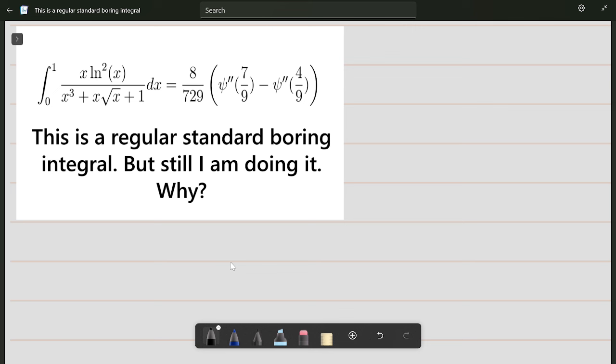This is a regular standard boring integral, but I'm still doing it just so that you would know how we solve these problems. Let's start. We basically have the integral from 0 to 1 of x ln²x divided by the given denominator.